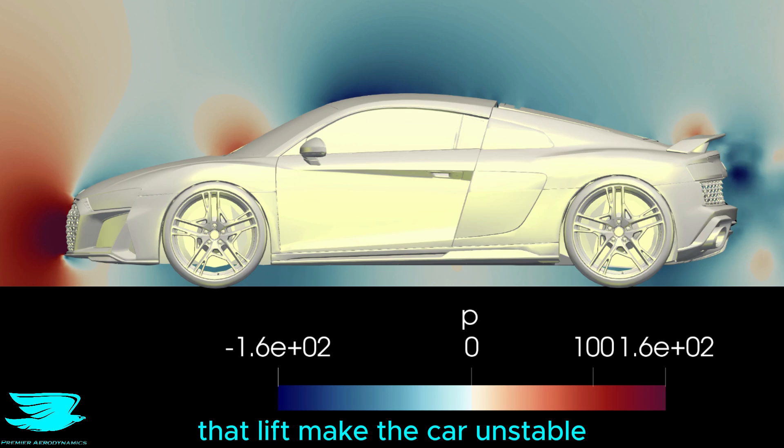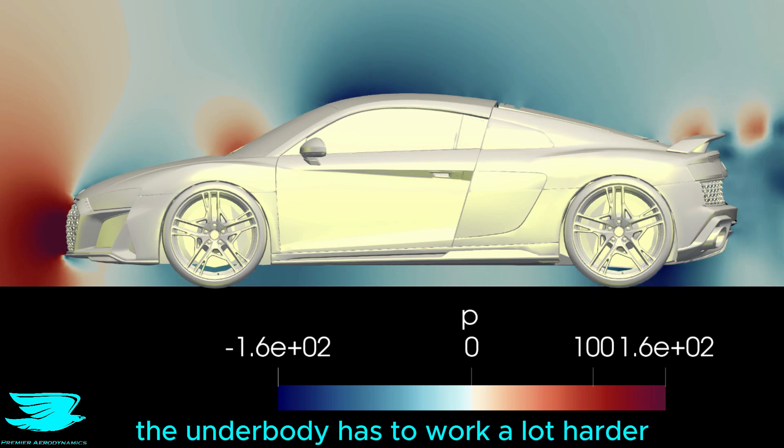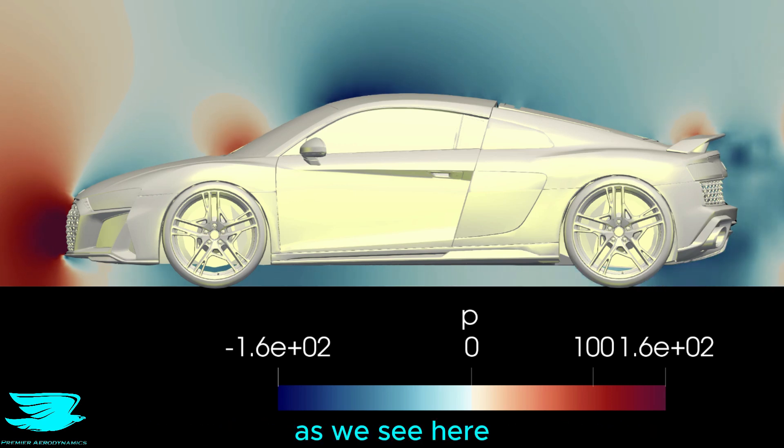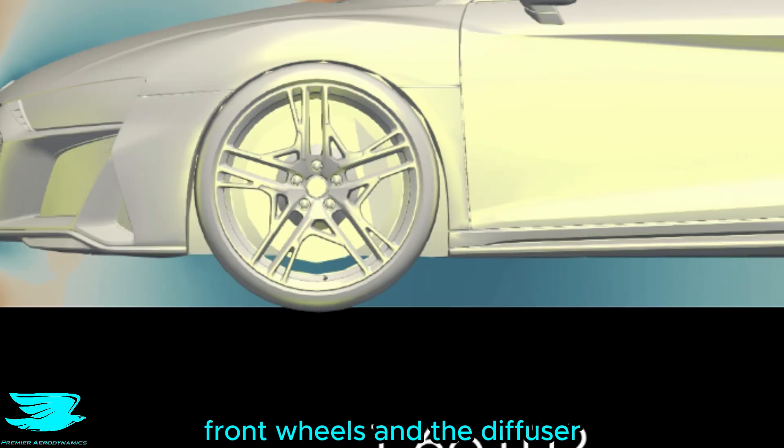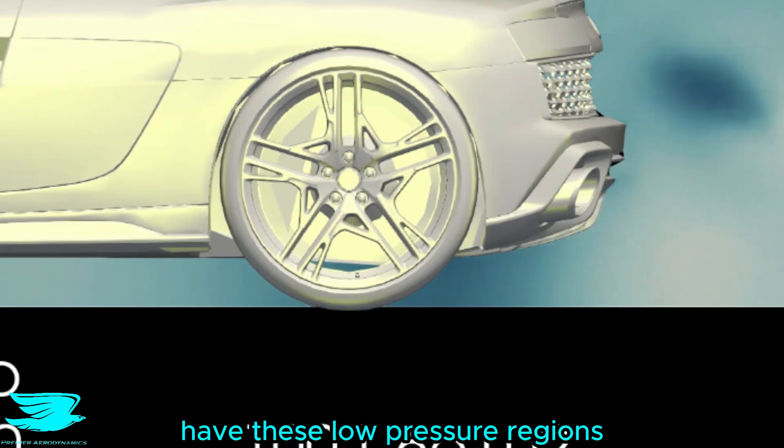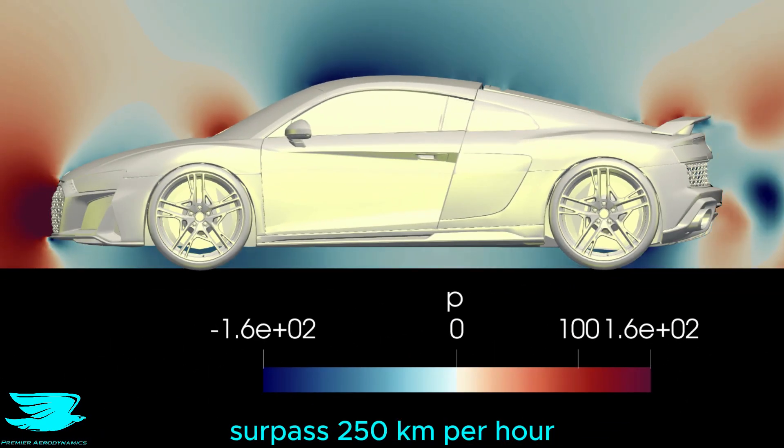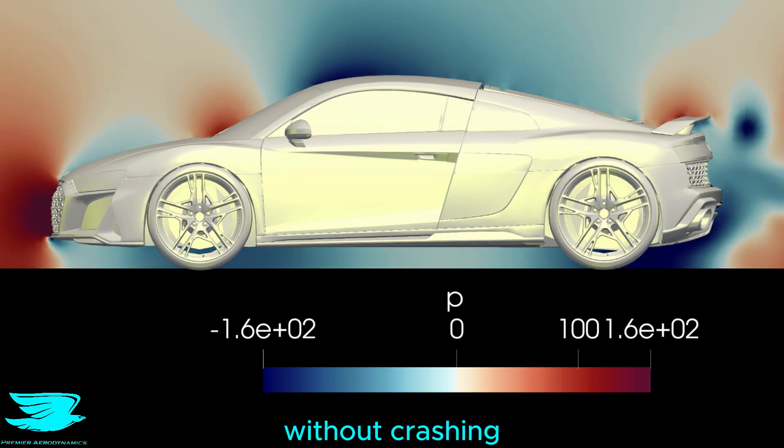That lift makes the car unstable. And to counteract that, the underbody has to work a lot harder. As we see here, there is good low pressure under the front wheels and the diffuser, which if the car didn't have these low pressure regions, it might not even be able to surpass 20 kilometers per hour without crashing.